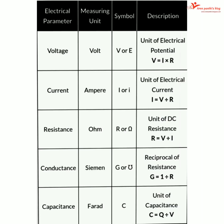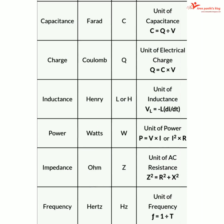Charge: unit coulomb, symbol Q, formula Q = C·V. Inductance: symbol L (henry), formula V_L = −L·di/dt. Power: symbol W, formula P = V×I or I²R. Impedance: unit ohm, symbol Z, formula Z² = R² + X².